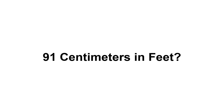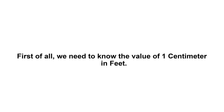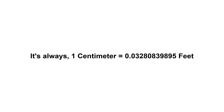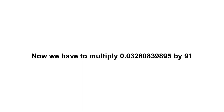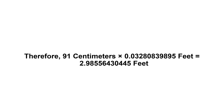91 centimeters in feet. First of all, we need to know the value of one centimeter in feet. One centimeter equals 0.03280839895 feet. Now we have to multiply 0.03280839895 by 91, therefore 91 centimeters times 0.03280839895 feet.